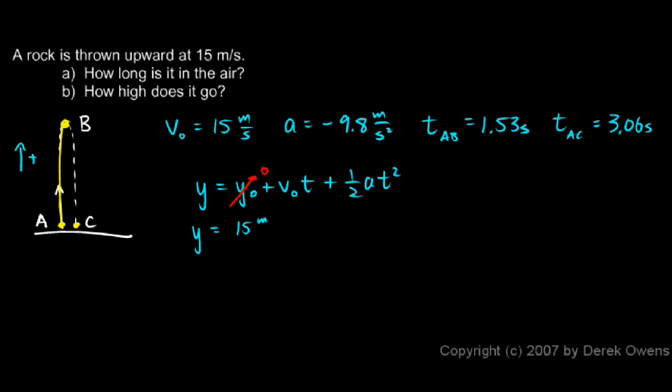Plus ½ times a, which is negative 9.8 meters per second squared, times my time of 1.53 seconds squared.